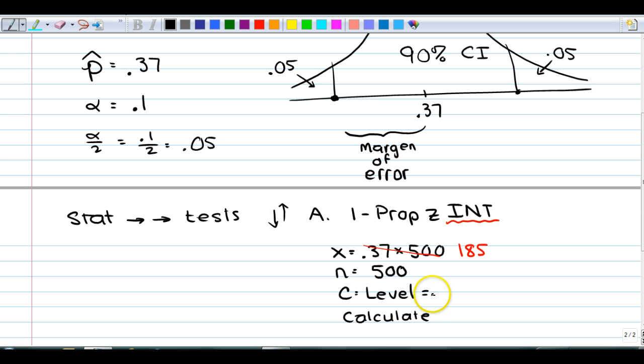My c-level. Well, c-level is 1 minus alpha. That's the confidence level. So if they gave you alpha, you could certainly calculate your c-level. That's going to be 0.9.